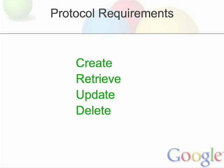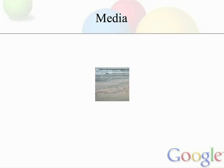So we're done. We've covered all four parts of what you would want out of a publishing protocol: creating, retrieving, updating, and deleting entries. Well, we're at least done as far as text is concerned. What about media? What if I wanted to add an image or a sound or video? How do you do that in the Atom Publishing Protocol?